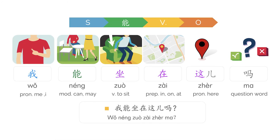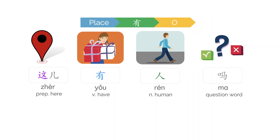How could we ask them? We normally ask, 我能坐在这儿吗? 能 means to be able to do or to be allowed to do something. So the sentence means 'can I sit here?' We can also simply ask 这儿有人吗? which literally means 'is there someone here?'